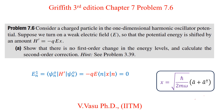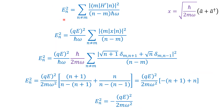Now we will calculate the second-order energy correction. By definition, the second-order energy correction is E²ₙ = Σ_{m≠n} |⟨m|H'|n⟩|² / (Eₙ - Eₘ), where the denominator involves (n - m)ħω.